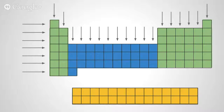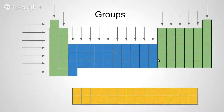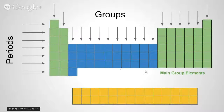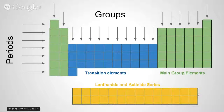You need to start getting used to using proper periodic terms when describing things on the table. When we're talking about elements going from the top to the bottom in each column, we actually call columns groups. When we go from left to right across rows, rows on the periodic table are called periods. The elements shown in green are called main group elements, while the elements kind of shoved away a bit are called transition elements. And the ones at the bottom are called the lanthanide and actinide series.